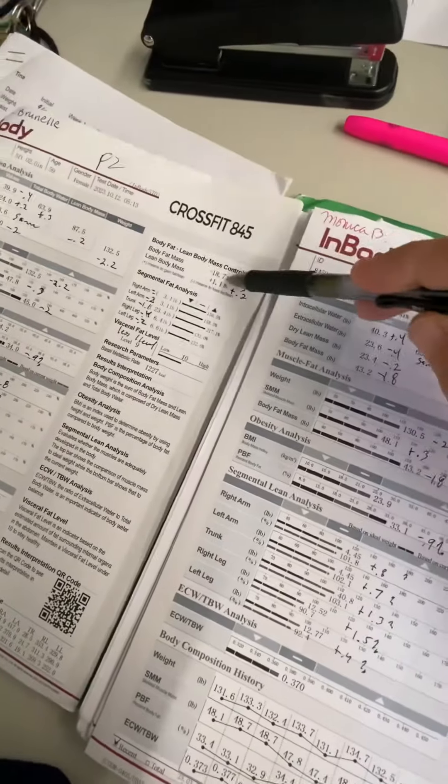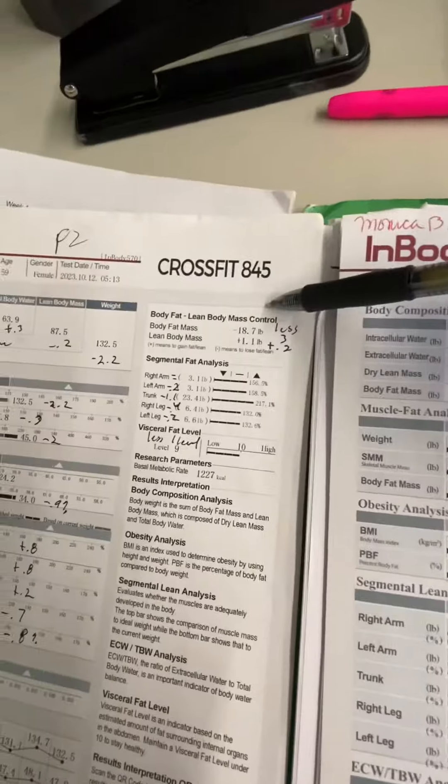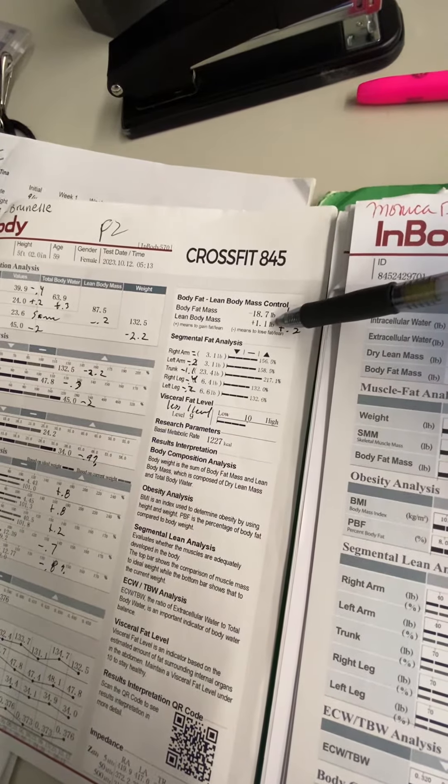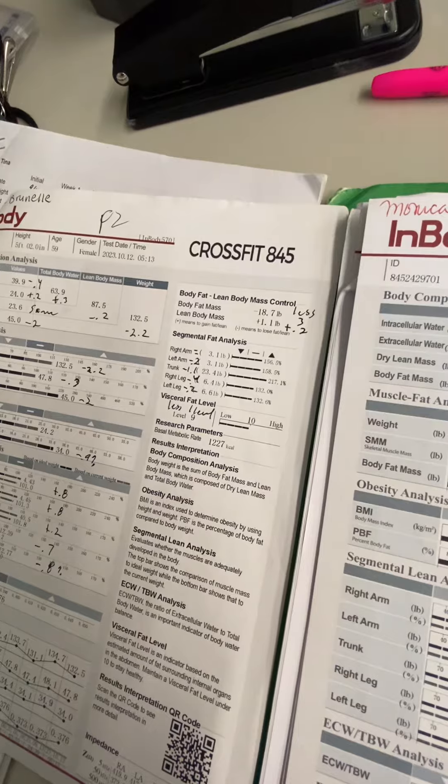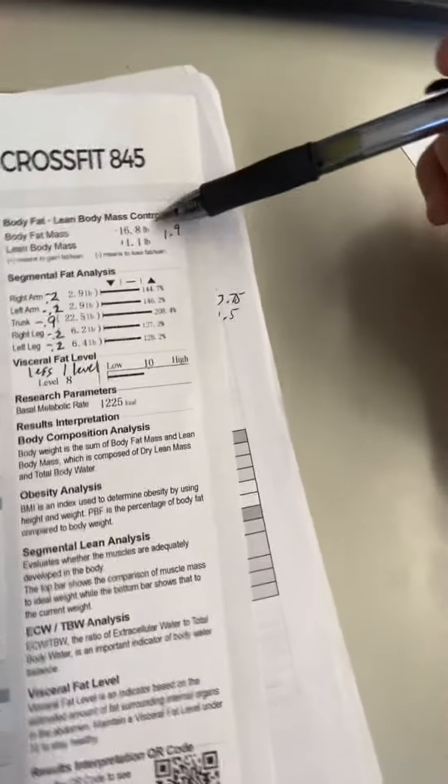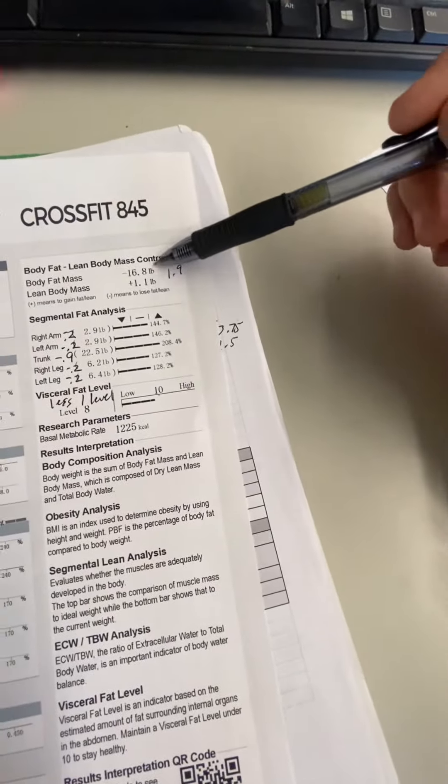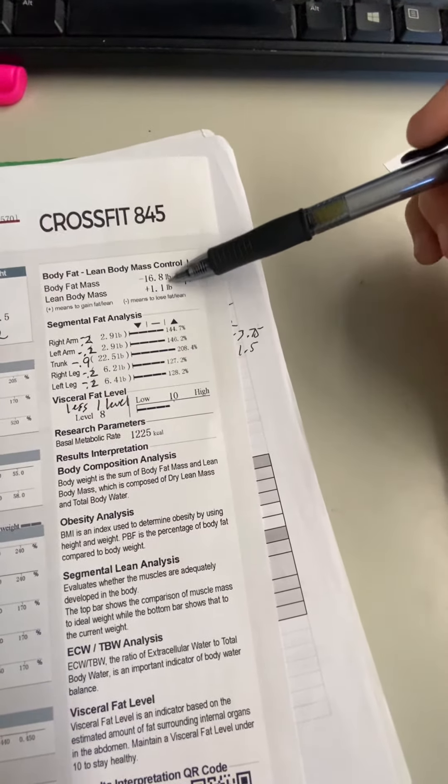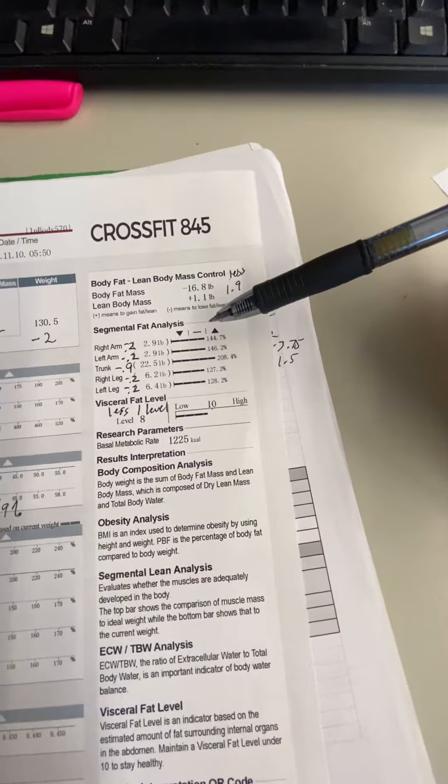So your previous scan was recommending 18.7 pounds of body fat loss and gaining 1.1 pounds of muscle. This one's less 1.9, so it's recommending 16.8 pounds of body fat loss, but that muscle thing is still there. We still need to gain muscle, but all in all, really happy with this scan for you.